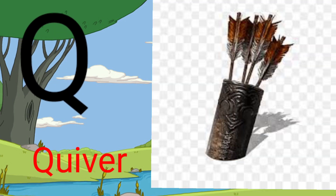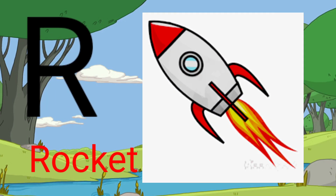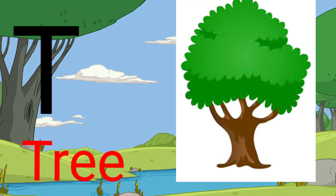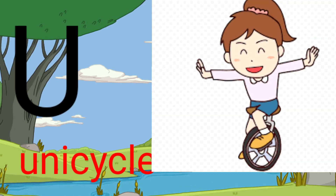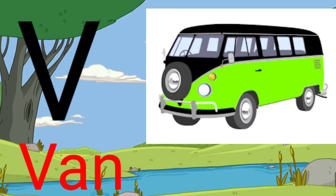U for cuber, R for rocket, S for sheep, T for tree, U for uncycle.